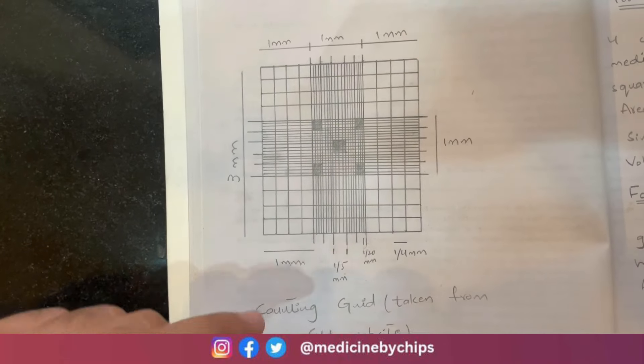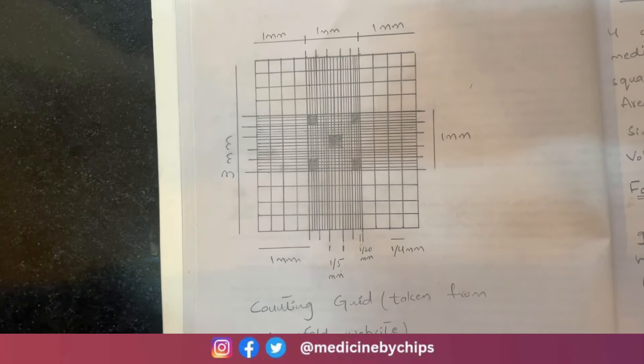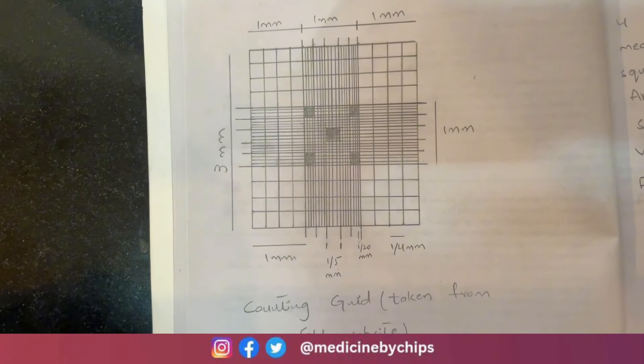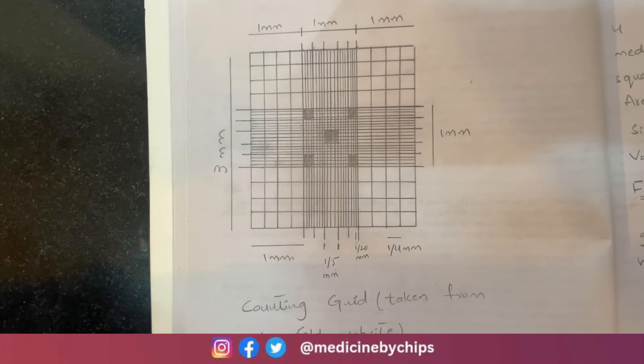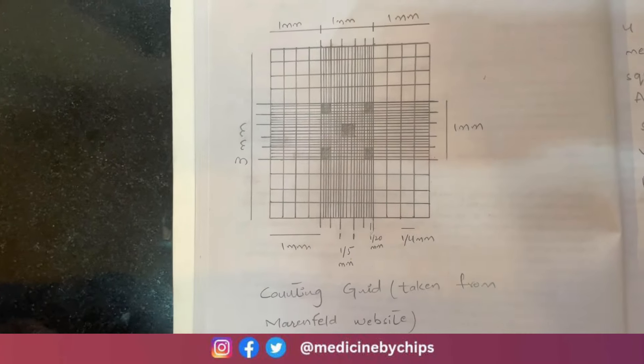In the central part there are five total groups of smaller squares, which are totally 16 squares each, equating to almost 80 squares, with an area of 1/20 by 1/20.